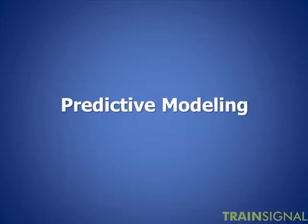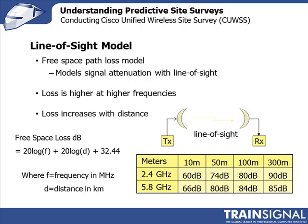Now let's take a look at the propagation models. We start with the line-of-sight model — the free space path loss model — because it is the easiest to understand. Basically, when your signal is transmitted from one antenna and arrives at the second antenna, the loss you incur will be related to the distance and the frequency you're operating on. The greater the distance, the greater the loss; and the higher the frequency, the greater the loss. This is why a signal operating at 2.4 GHz will travel further than one at 5 GHz. You can see in this table that if I'm transmitting in the 2.4 GHz band...